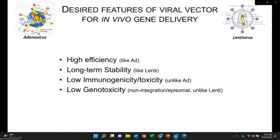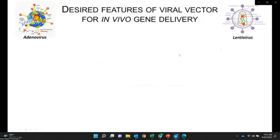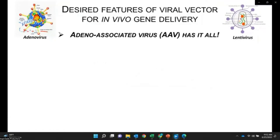We also want the vector to be safe — we don't want the vector genome integrating into our genome, which would be unsafe. Adenovirus and lentivirus have their strengths but also some drawbacks. Fortunately, AAV vectors have all these strengths with no obvious drawbacks. AAV is very efficient, very safe, and there is no known human disease related to AAV. It can last for the entire lifespan, at least in mice. AAV does not integrate into our genome, which renders a very good safety profile.